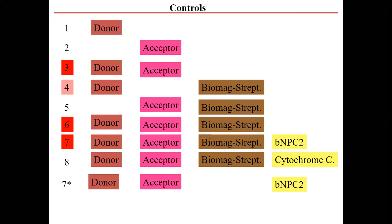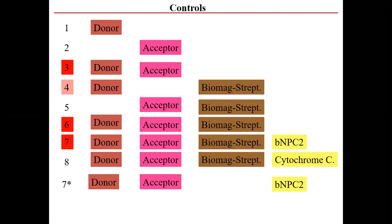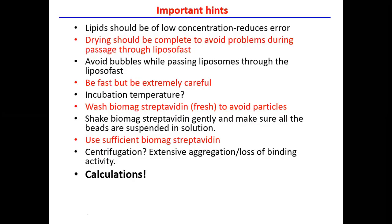We had many controls. In biological systems, you want to be sure that one thing has not contaminated another. So we have a donor alone, a receptor alone, a donor and receptor together, a donor with our Balmac to separate the biotin, and a receptor with the Balmac. The cytochrome c is to ensure what we have is within control, because this is a protein not known to transport cholesterol.